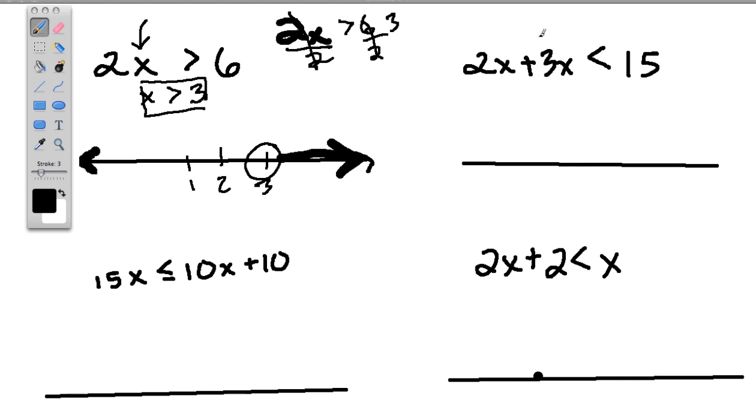Next, we have this one over here. Combine like terms. 2x plus 3x is 5x. And 5x is less than 15. So x has to be 3 because 5 times 3... x has to be less than 3, excuse me, because 5 times 3 is 15. What do I mean? Well, divide both sides by 5. 5 divided by 5 is 1. So it's just x is less than 3.